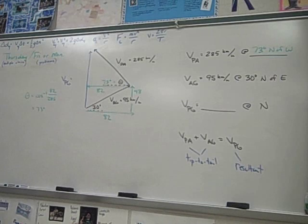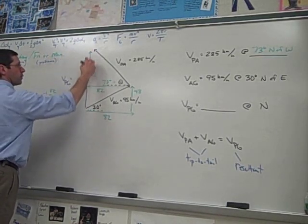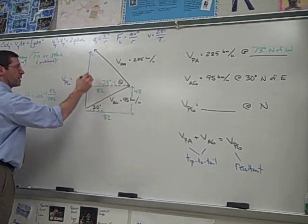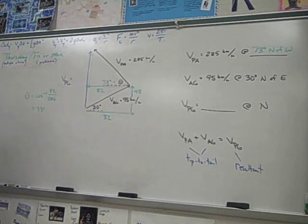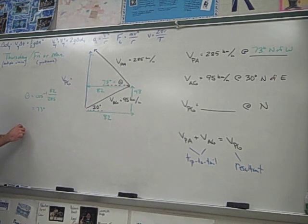And now what's left to do is find this side, and then the total y is 48, and that gives you the velocity of the plane, the ground speed. That's the opposite side, so we can do sine 73.